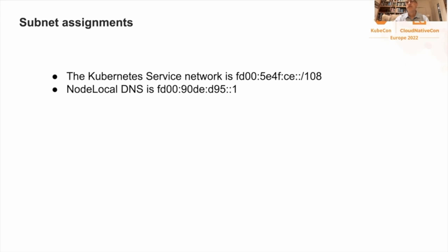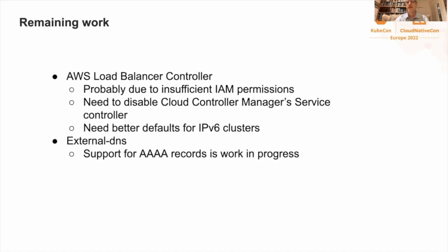For the Kubernetes service network, I attempted to spell 'service' in hexadecimal — you kind of have to squint a lot. For node local DNS, I attempted to spell 'node DNS'. There is additional work needed in upstream projects for a practically functioning cluster. At the time this talk was recorded, we don't yet have the AWS load balancer controller working, probably because KOPS wasn't giving it sufficient IAM permissions. The AWS cloud controller manager service controller doesn't work with IPv6, so we'll need to disable that and use LBC for services of type load balancer. External DNS currently doesn't support quad-A records — this is a work in progress.